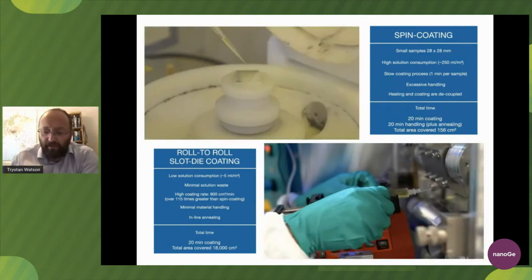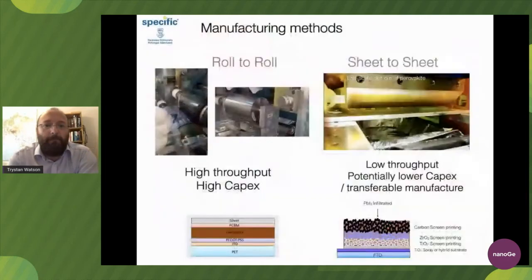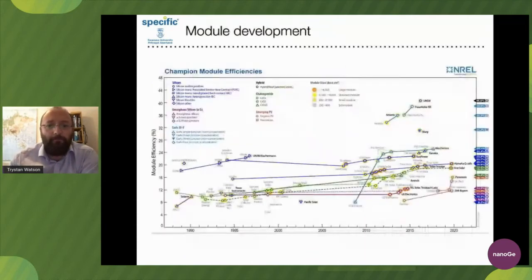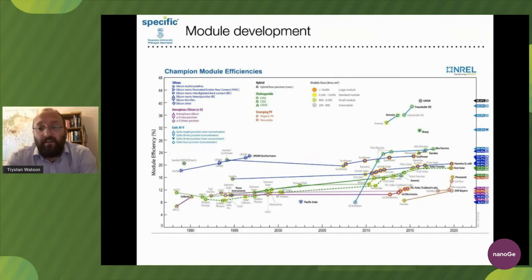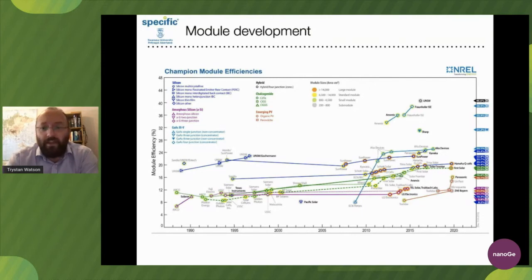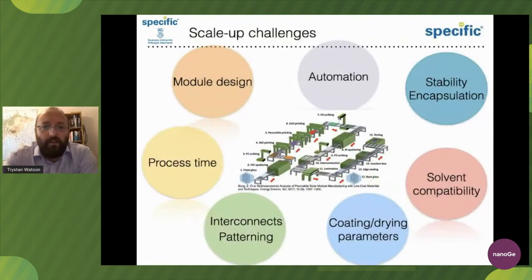We want to be pushing forward, and we'll be hearing from the likes of Aldo, Hongwei, and David about that later. We can do it via roll-to-roll or sheet-to-sheet. What's nice is the global community is progressing - we now have champion module efficiencies, and perovskite has made an appearance there. We're starting to see small modules tested to a high standard, appearing competitively on those champion module efficiency charts, which shows that all the effort out there is being translated.